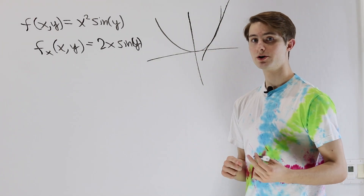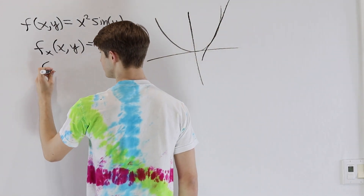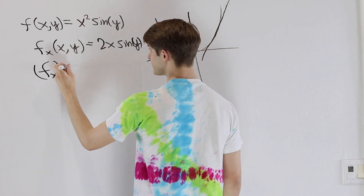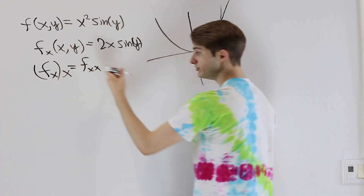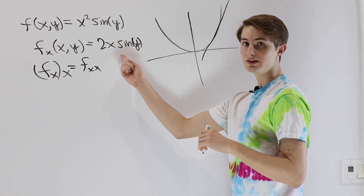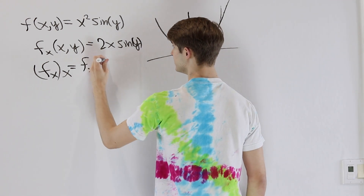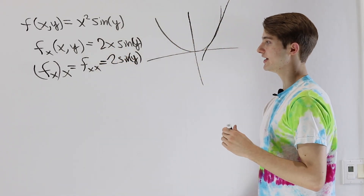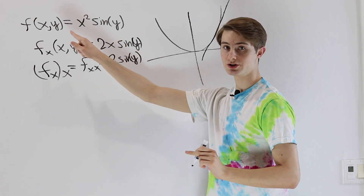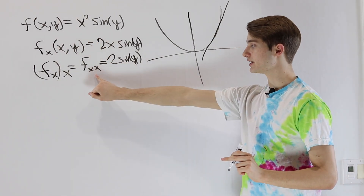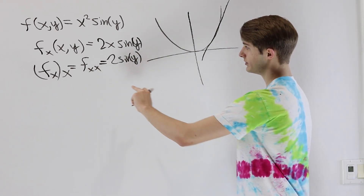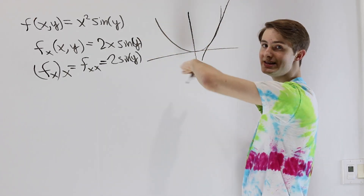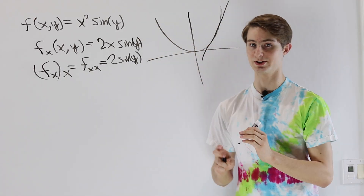The first type of higher-order partial derivative is where we take f_x and then take the partial derivative again with respect to x, which we write as f_xx. That means we take this and differentiate with respect to x one more time, giving us 2 sin(y). We can reduce to one dimension since we're still only looking at x, so the second partial derivative with respect to x is just the concavity of our function in the x direction — just like single-variable calculus.